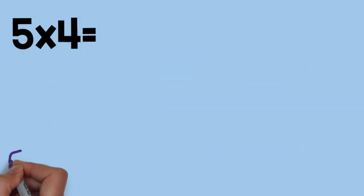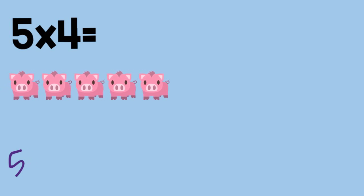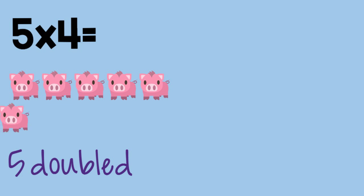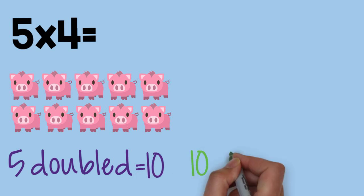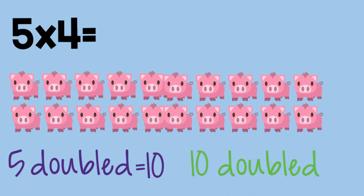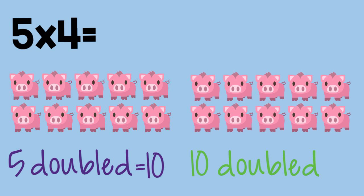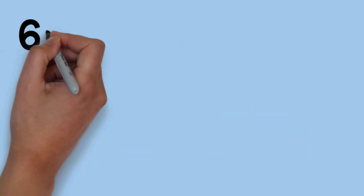Five times four. Five, doubled, is ten. Ten, doubled, is twenty. Five times four equals twenty.